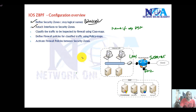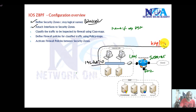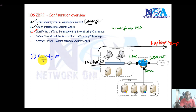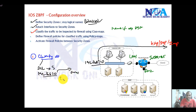The next thing is we need to define what traffic we want to allow. For example, I want to make sure that users in my LAN can access HTTP traffic, FTP traffic, or maybe ICMP traffic. So the first step is to classify the traffic. Classification is done with the help of class maps. We can write ACLs to specifically match traffic — for example, traffic coming from a network going to any destination matching HTTP, FTP, or ICMP.